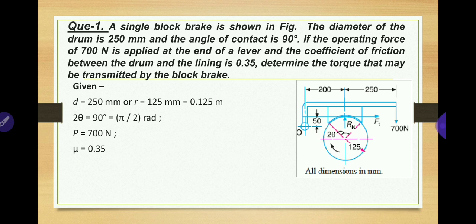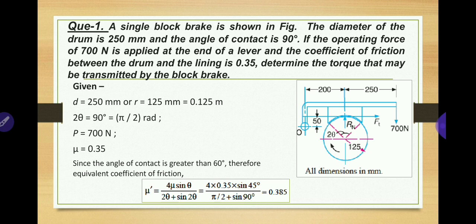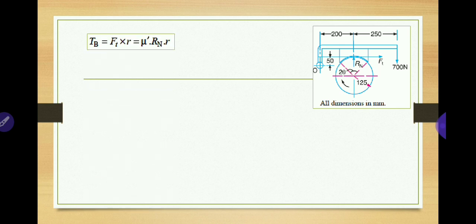We need to calculate the breaking torque TB. First, find the equivalent coefficient of friction: mu dash = 4μ sinθ / (2θ + sin 2θ). With μ = 0.35 and θ = 45°, place θ in radians in the denominator and degrees where sin θ appears. After substituting these values, mu dash = 0.385.